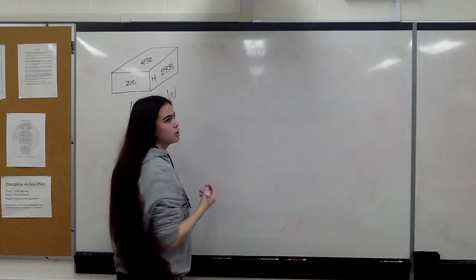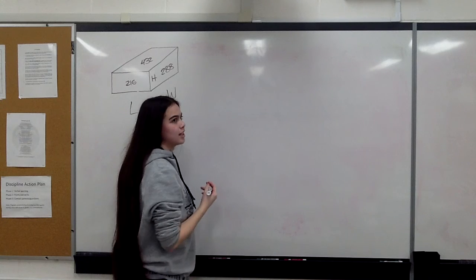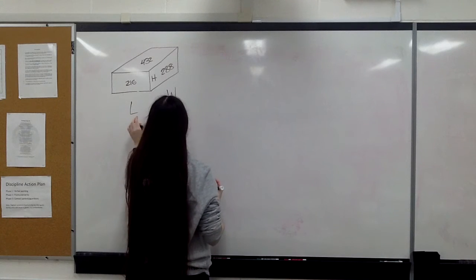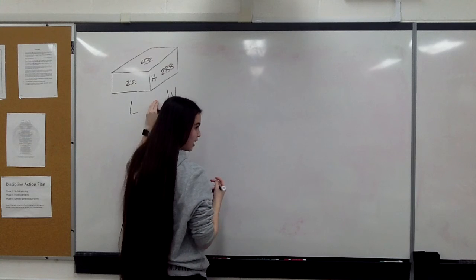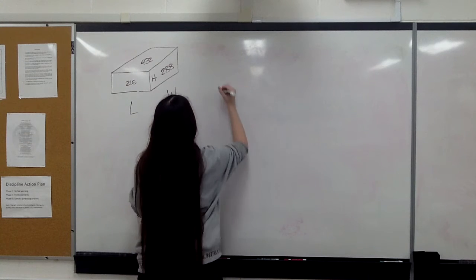From there, multiply like you would to find areas—base times height. So write it down as length times height, width times height, and length times width.